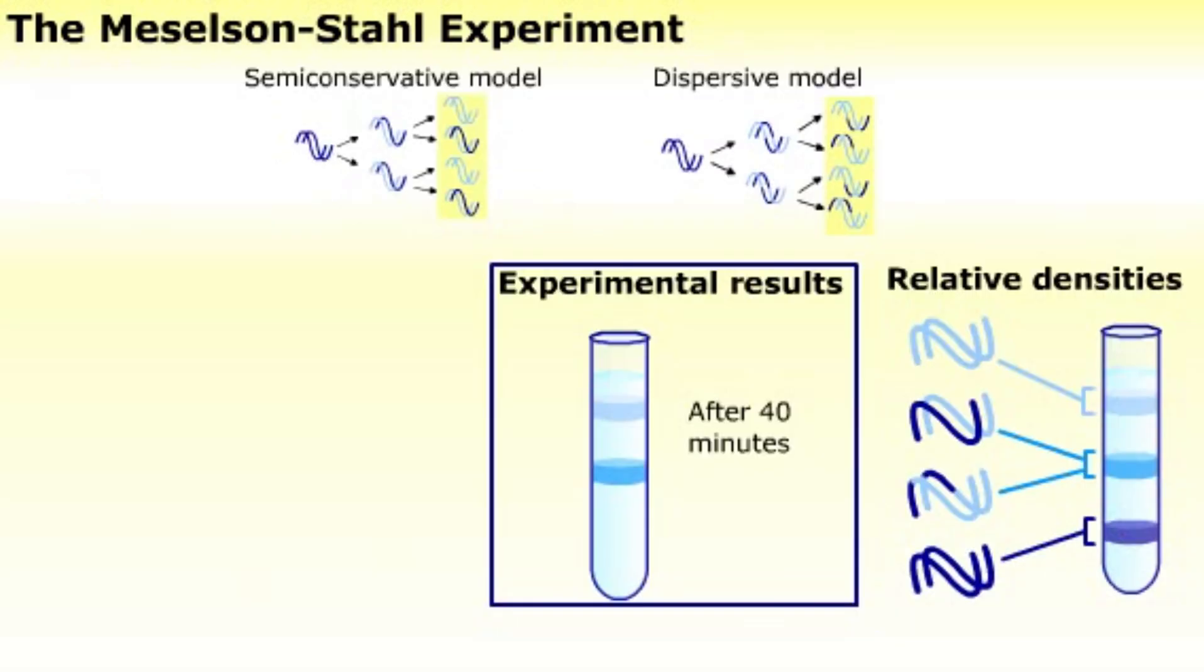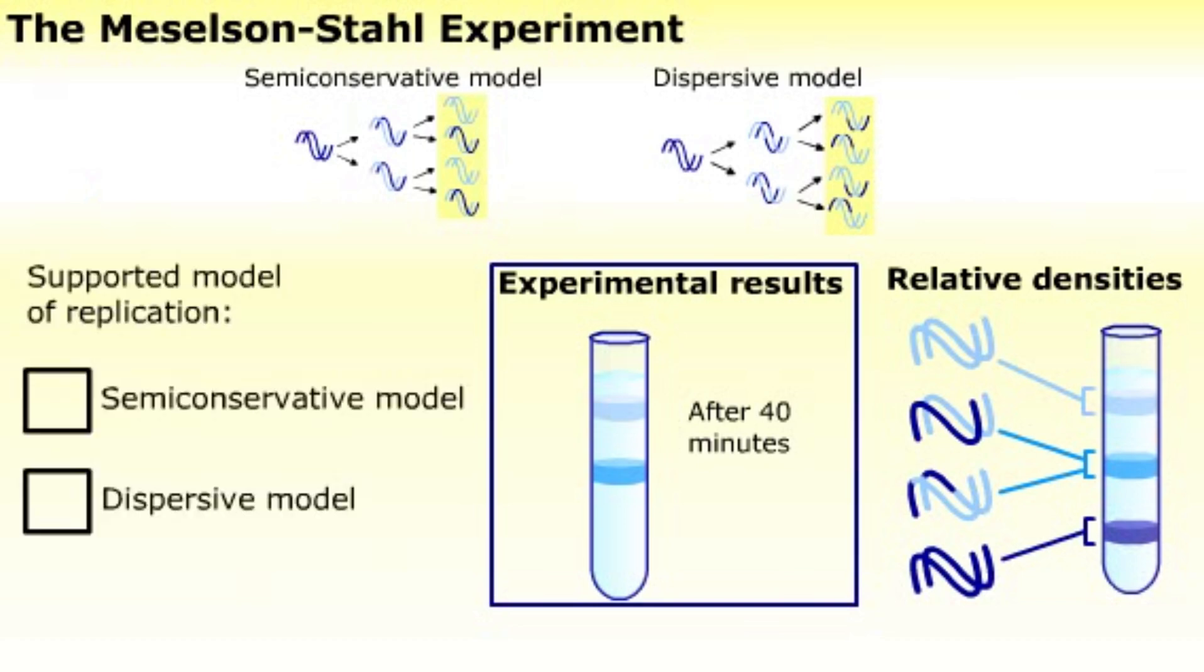The DNA extracted after 40 minutes had a light band of DNA and a band of intermediate density. Select the replication model supported by the data. Click Submit to see if you're correct.